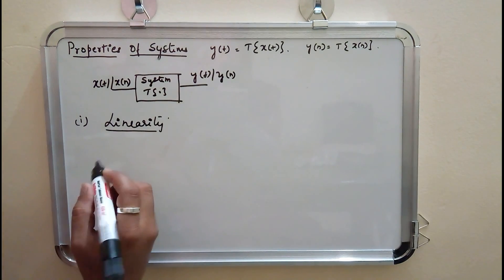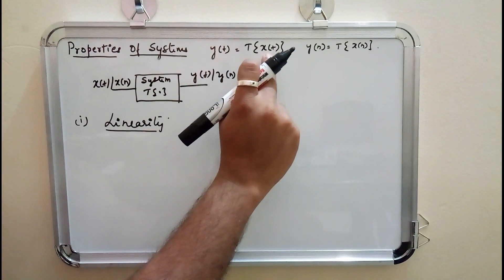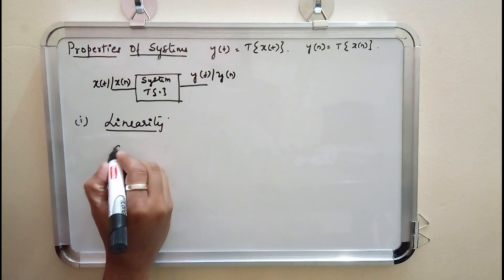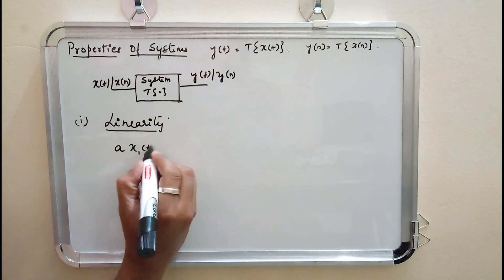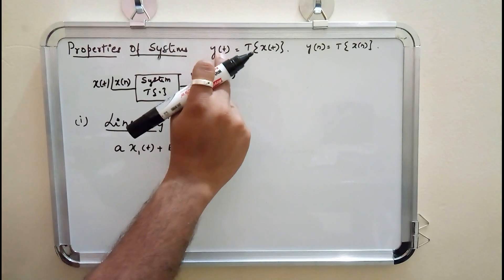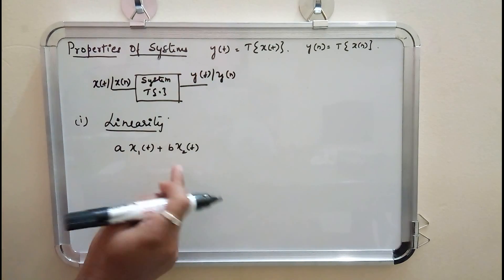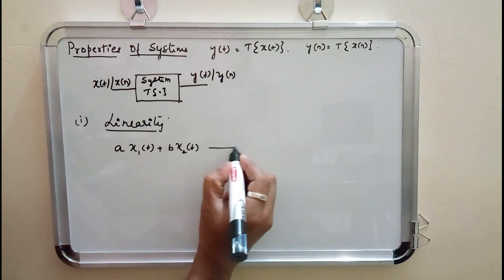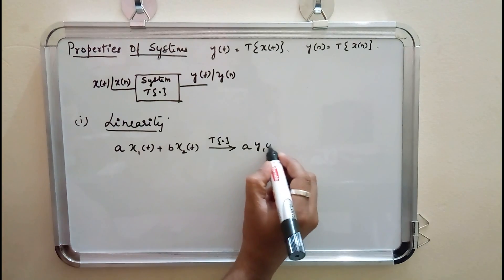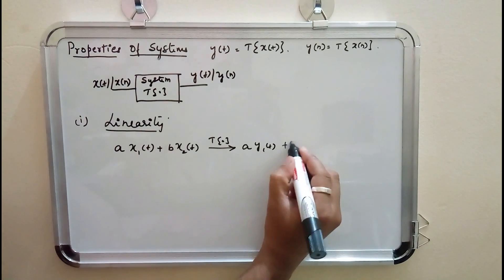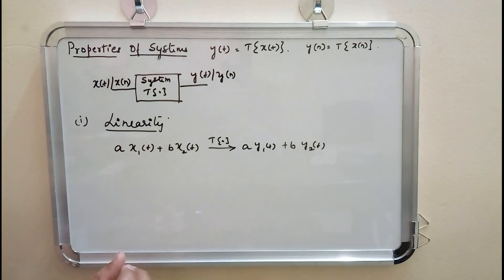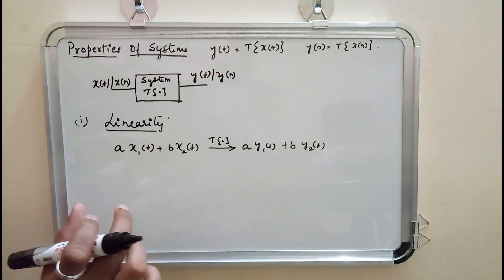In the basic case, there is a single input and you get a single output. If I take more than one input — say a weighted sum of more than one input — if there was one input X of T I would get Y of T. With two inputs, if this weighted combination is given to the system and transformation happens, the output must be A times Y1 of T plus B times Y2 of T. If this condition is satisfied, then the system is said to be linear.